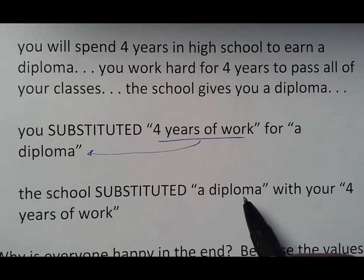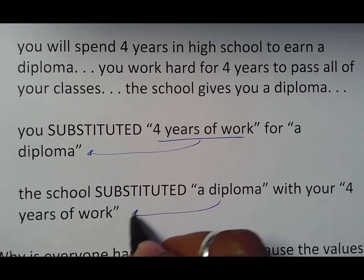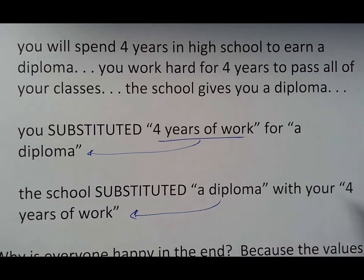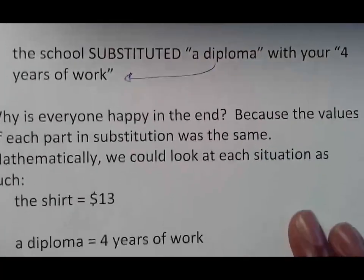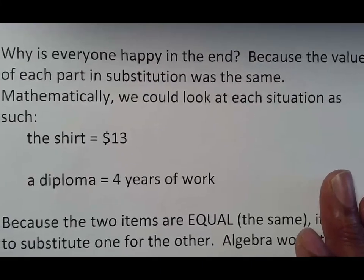The school held the diploma, but it traded the diploma that it had for your four years of hard work. Both of you traded. You took your four years of work. You gave it to the school. The school gave you a diploma. The school took the diploma that it had. It saw that you did four years of hard work. It traded its diploma for your four years, and then everything went on. Why is everyone happy? Because the values of each part was the same.